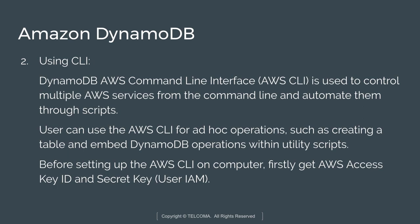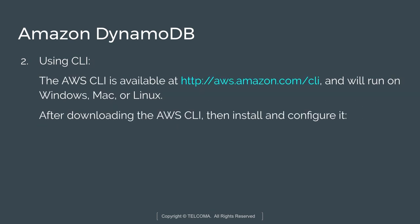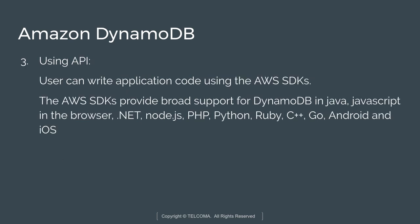The CLI is used to control multiple AWS services from the command line and automate them using scripts. Users can use the AWS CLI for ad hoc operations such as creating a table or embedding operations within utility scripts. Before setting up the CLI, you require an AWS Access Key ID and Secret Key identified using IAM, then install and configure the CLI on your operating system.